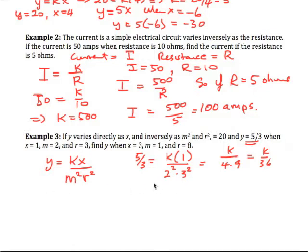So this means that k is equal to 5 times 36 over 3, or 5 thirds times 36. And that will in fact be, 3 times 36 goes 12, so that would be 60. So our actual formula is y is equal to 60x over m squared r squared.